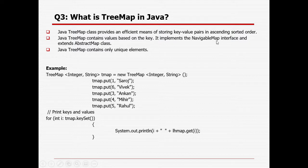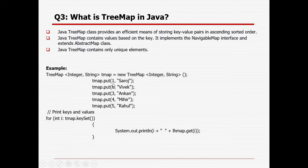TreeMap implements the NavigableMap interface and extends the abstract map class. Java TreeMap contains only unique elements. The syntax for TreeMap is: use the TreeMap keyword with data types for keys and values, create an object with the new keyword. Using the put method you can add multiple values — keys should be unique, values can be duplicate. Use a for loop with the keySet method to print all keys and values.